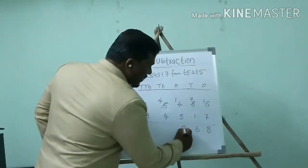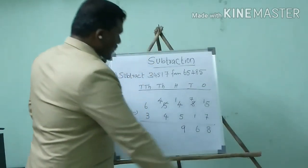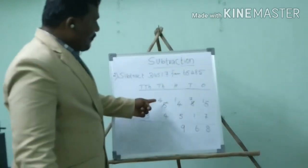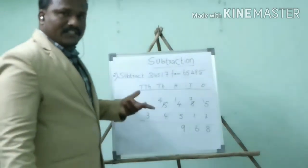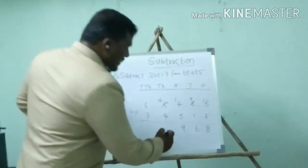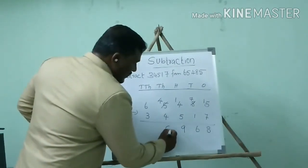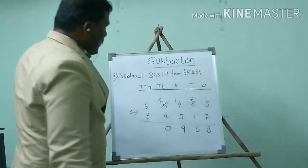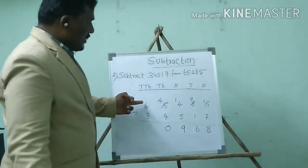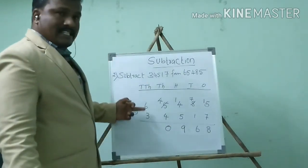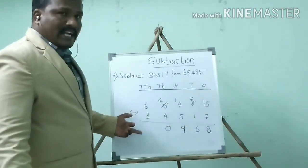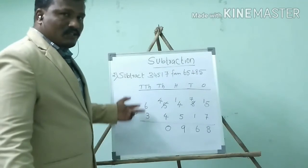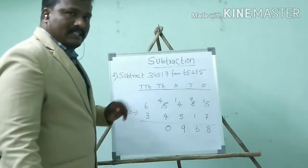9 is the difference. Now 4 minus 4 equals 0 — easily. Now minuend is 6, subtrahend is 3 — we can easily subtract. So 6 minus 3 equals 3.